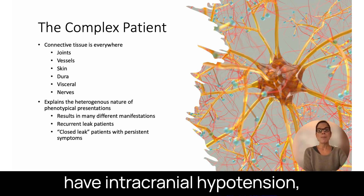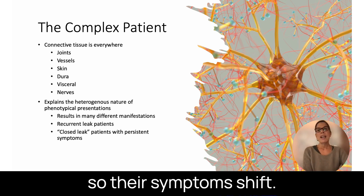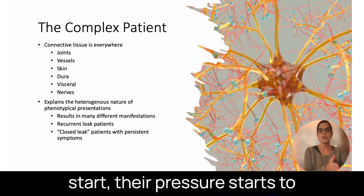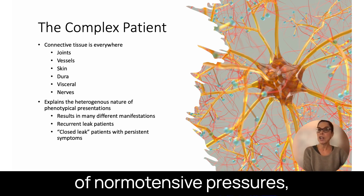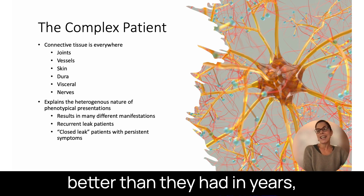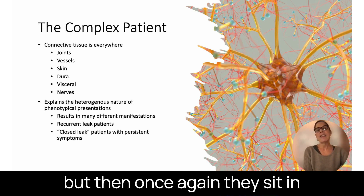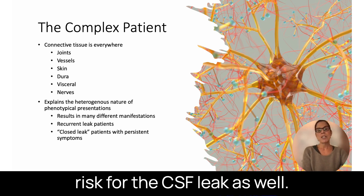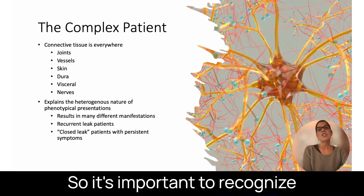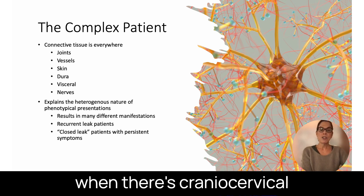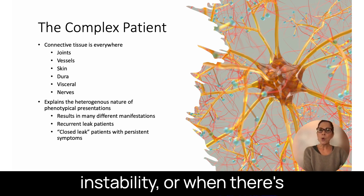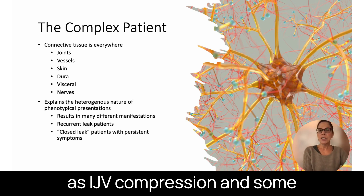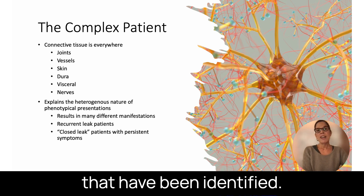Those patients can form a dural tear or diverticula from high pressure and then develop intracranial hypotension — a CSF leak — so their symptoms shift. Sometimes when we fix the CSF leak, their pressures start to rise; they go through a period of normotensive pressures during which they'll report feeling better than they had in years. But then they return to that chronic intracranial hypertension state, which had put them at risk for the CSF leak in the first place. So it's important to recognize cranial cervical instability or other reasons for elevated intracranial pressure, such as IJV compression and other compression disorders.